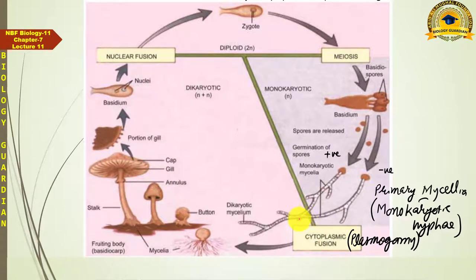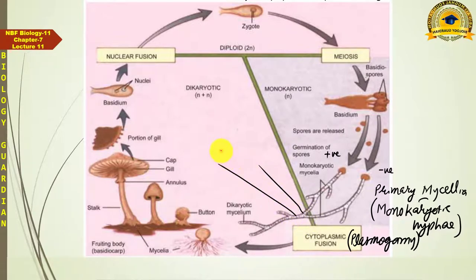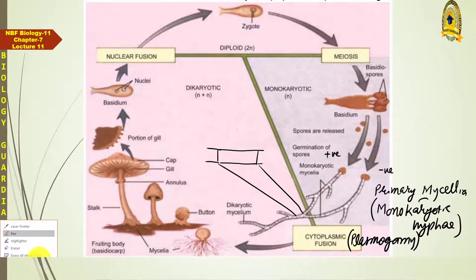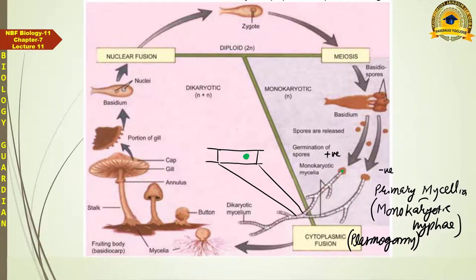As soon as plasmogamy is performed, a mycelium consisting of diakaryotic hyphae develops. If I enlarge this cell for you, it appears as a diakaryotic cell containing two genetically different nuclei. Primary mycelia undergo plasmogamy under the ground, and then further division continues within the soil.